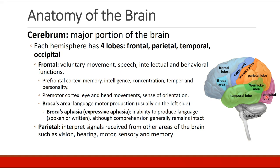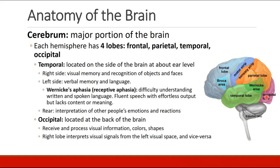The parietal lobe is responsible for interpreting signals received from other areas of the brain, such as vision, hearing, motor, sensory, and memory. The temporal lobe is located on the side of the brain at about ear level. On the right side it controls visual memory and recognition of objects and faces; on the left side it controls verbal memory and language. Wernicke's area is in the temporal lobe. A patient with Wernicke's aphasia will have difficulty understanding written and spoken language. They will be able to generate fluent speech with effortless output, but often it is gibberish and lacks any content or meaning.